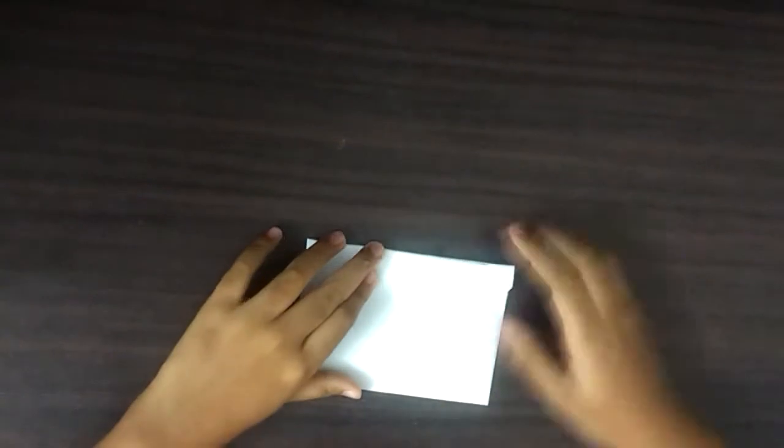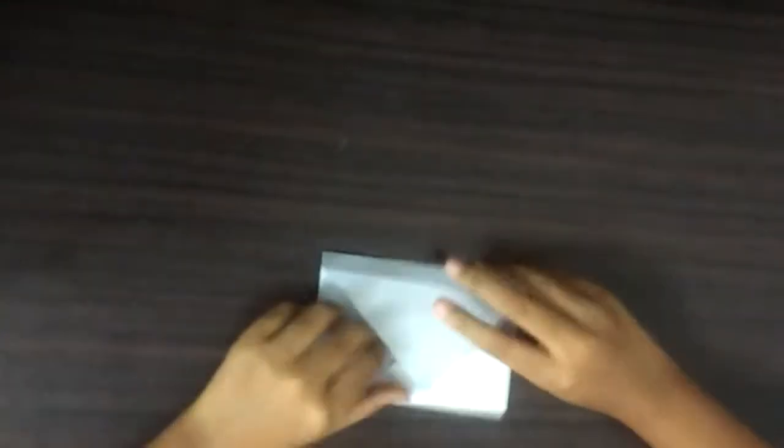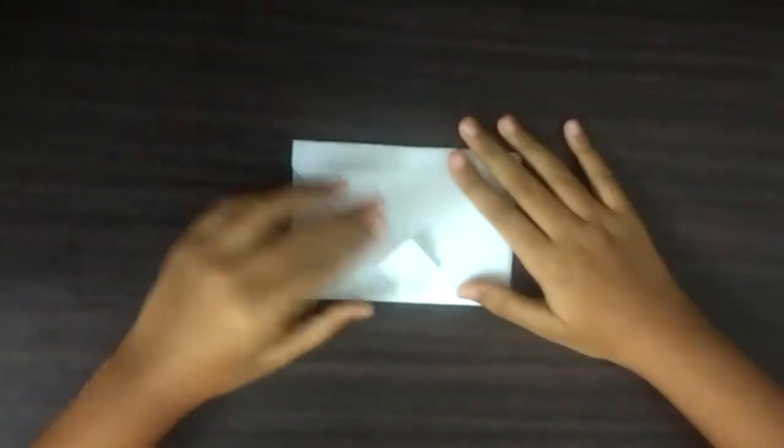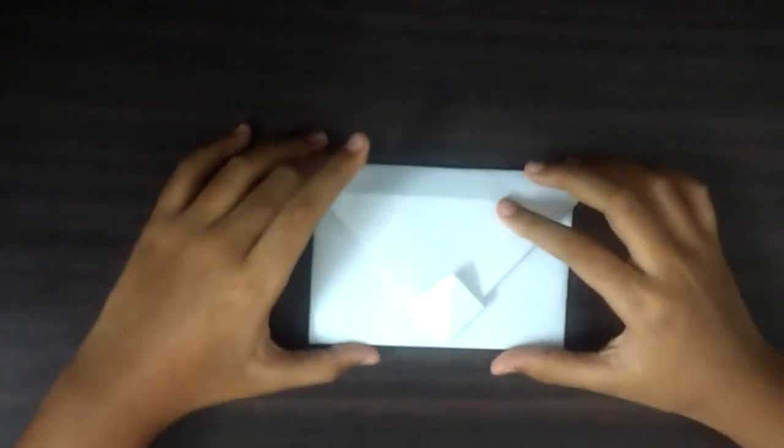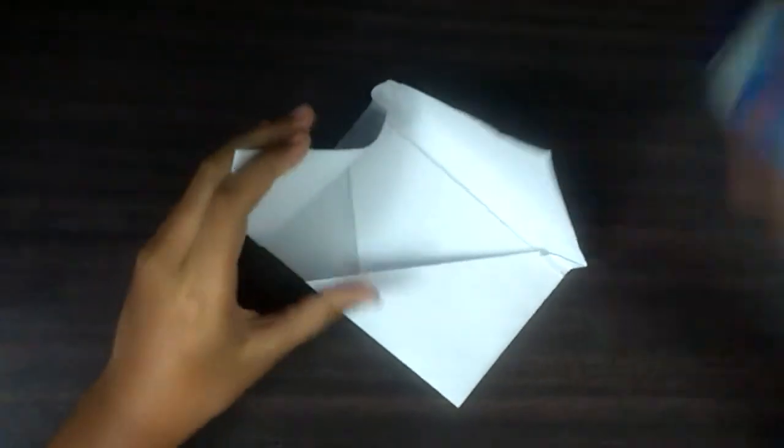Now we are going to fold the upper part and put it inside the lock. We use this lock so that the envelope doesn't open while you are giving it to someone. We are going to stick this part too.